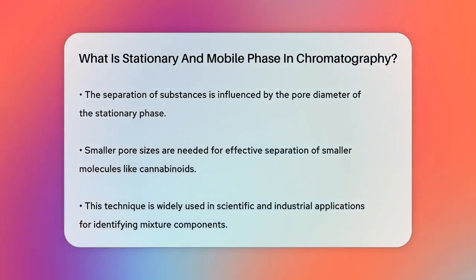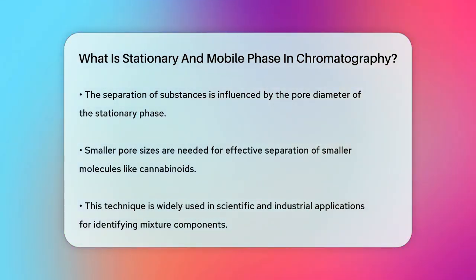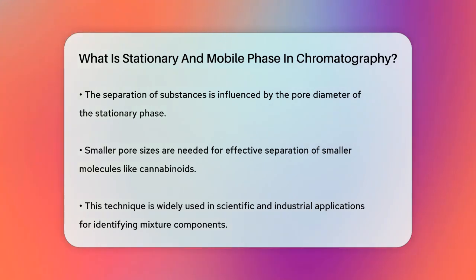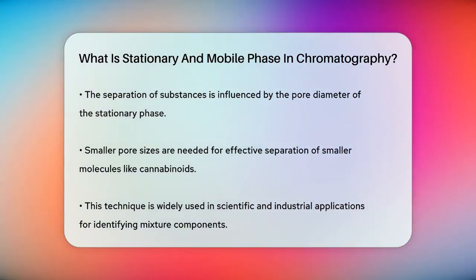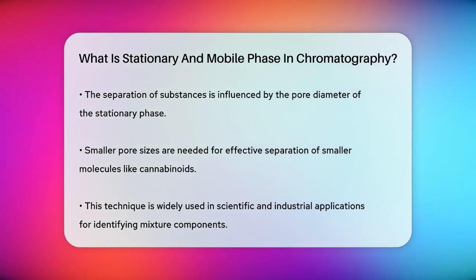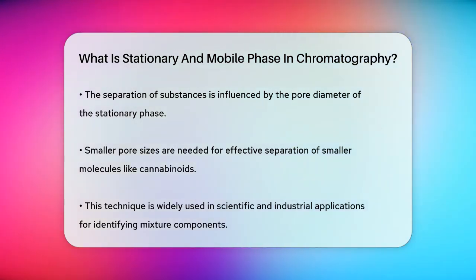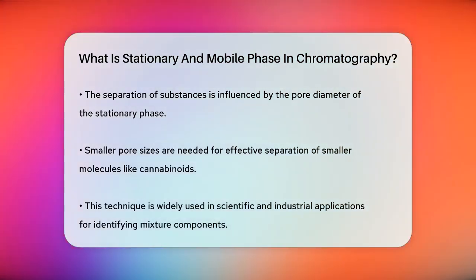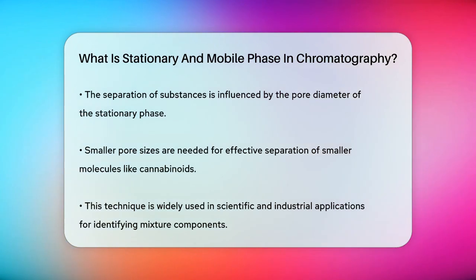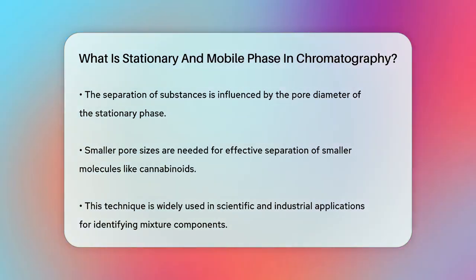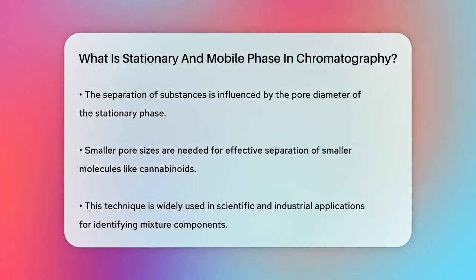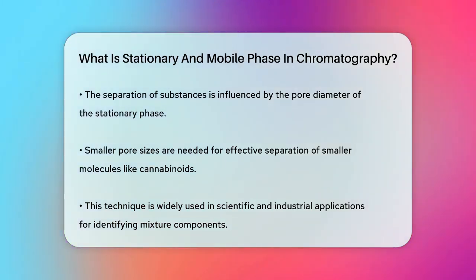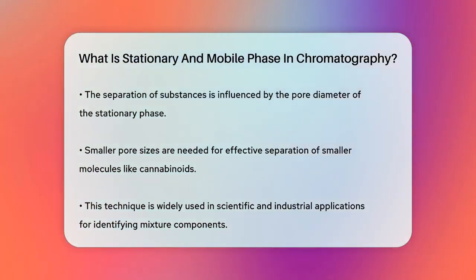In summary, the stationary phase is the fixed material that interacts with the substances, and the mobile phase is the moving solvent or gas that carries these substances through the stationary phase, allowing them to separate based on their different affinities. This process is essential for separating and identifying the components of a mixture in various scientific and industrial applications.